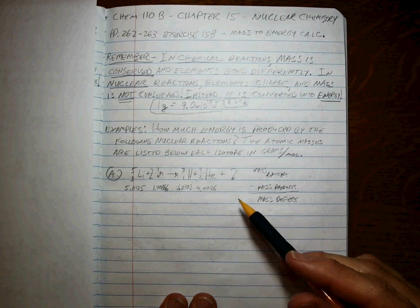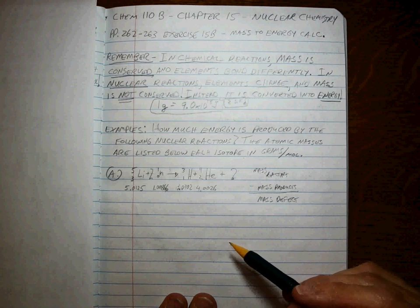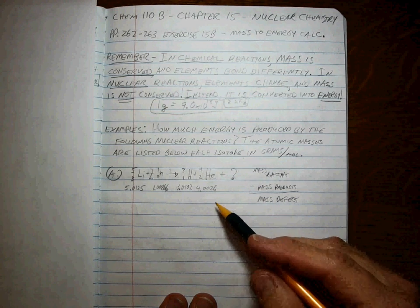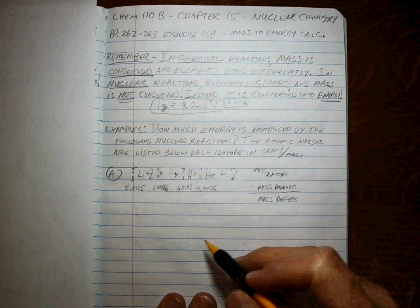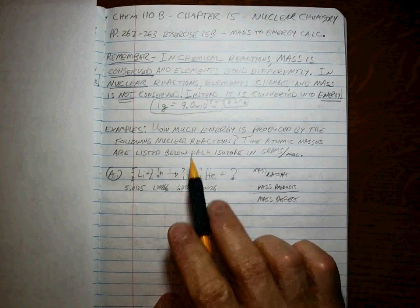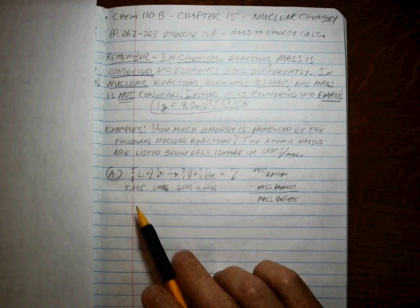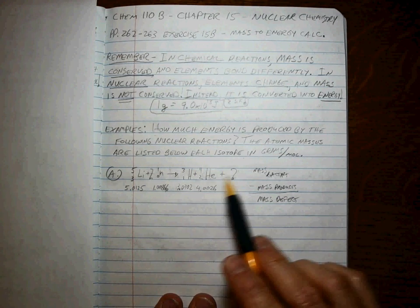You should go ahead and hit pause now so that you can be ready to do the problem when you get back. Okay, hopefully you hit pause, you went through, did your calculation, now you're back. That's what we got here. We've got how much energy is produced by the following nuclear reactions? The atomic masses are listed for each isotope in grams per one mole.